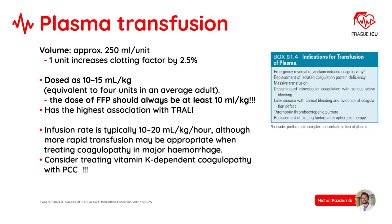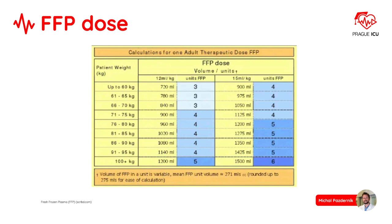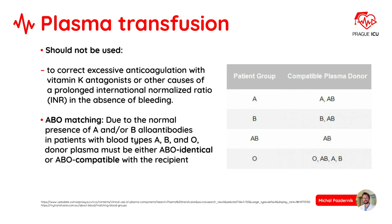The dose of FFP should always be at least 10 milliliters per kilogram. FFP has the highest association with TRALI. Infusion rate is typically around 10 to 20 milliliters per kilogram per hour, although more rapid transfusion may be appropriate when treating coagulopathy in major hemorrhage. We should always consider treating vitamin K dependent coagulopathy with prothrombin complex. On the right side, we can see summarized indications for transfusion of plasma. Plasma should be used to correct excessive anticoagulation with vitamin K antagonists or other causes of prolonged INR in the absence of bleeding. On the right side there is also a summarizing table of ABO matching.